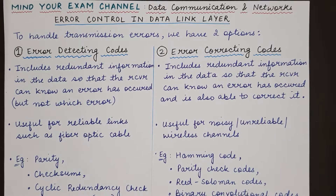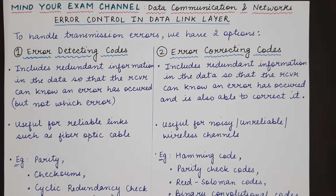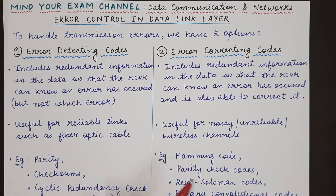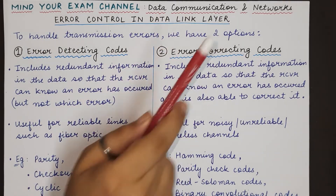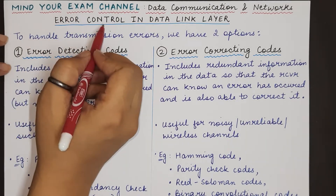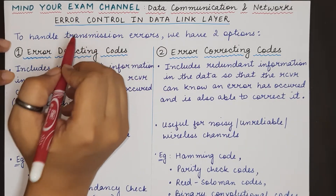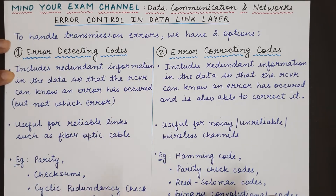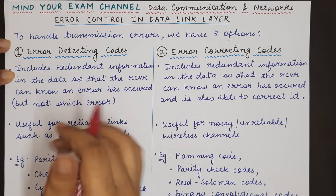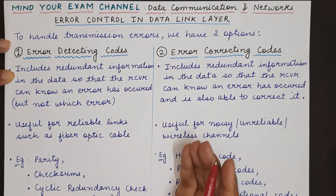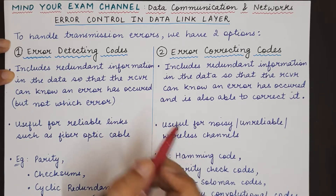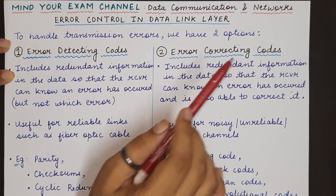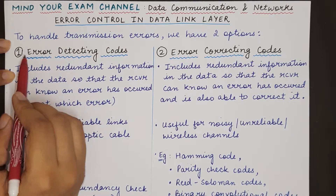Hello everyone, welcome back to my channel Mind Your Exam. In this video we will be studying about the second most important responsibility of the data link layer after flow control, and that is error control. Error control is required because data during transmission can get garbled, changed, or modified due to some reason. To handle transmission errors, we have two options: error detecting codes and error correcting codes.